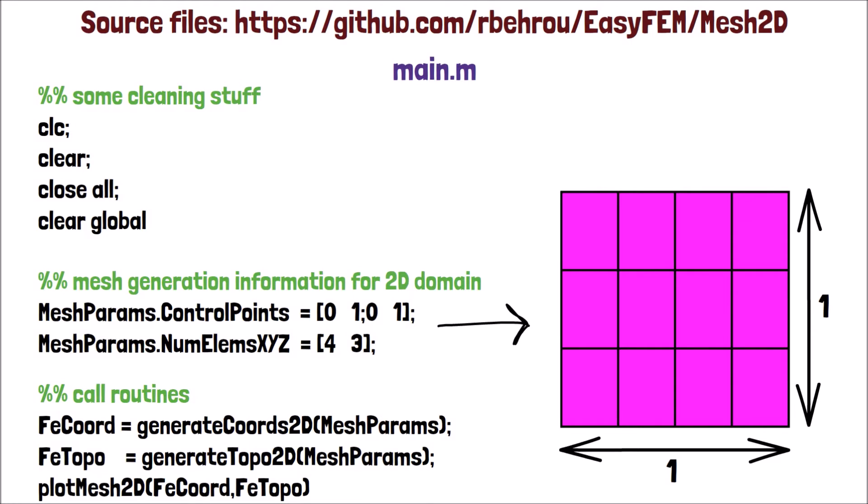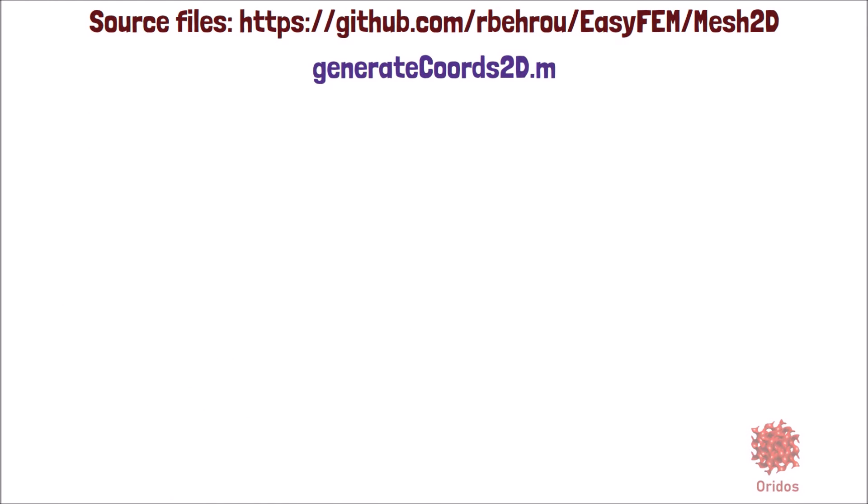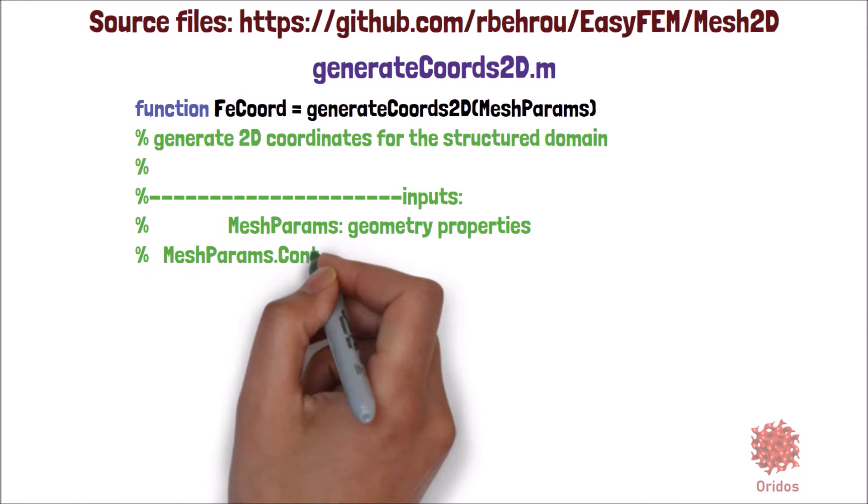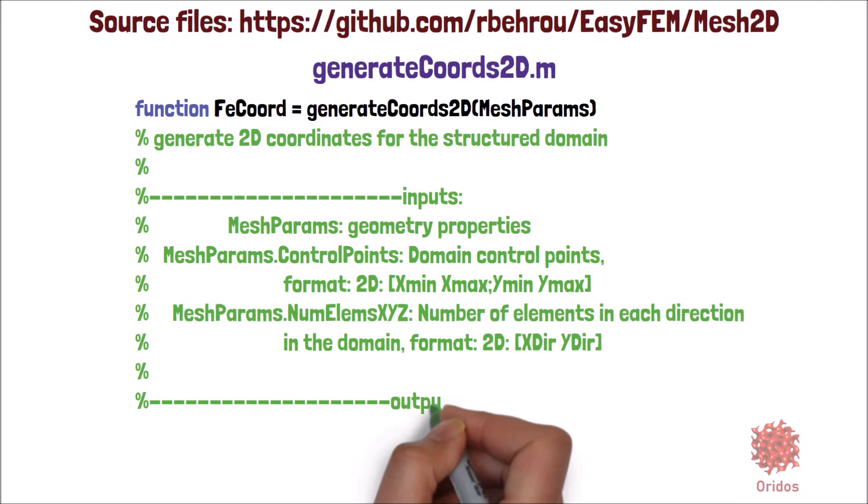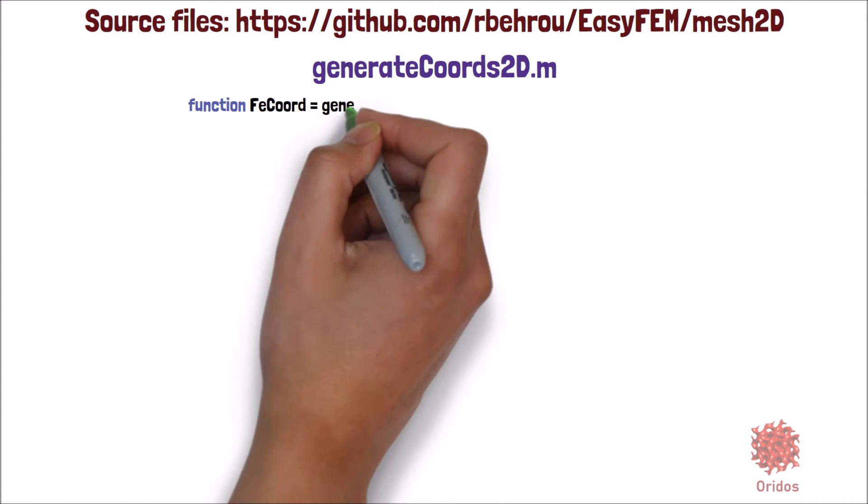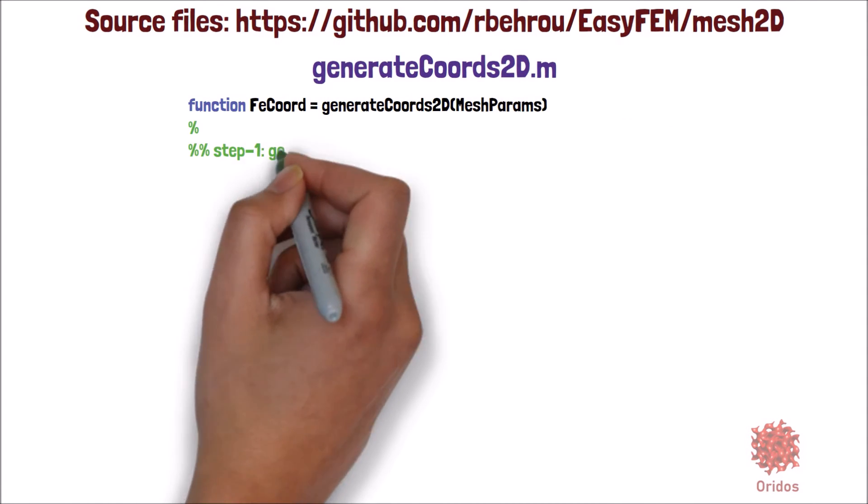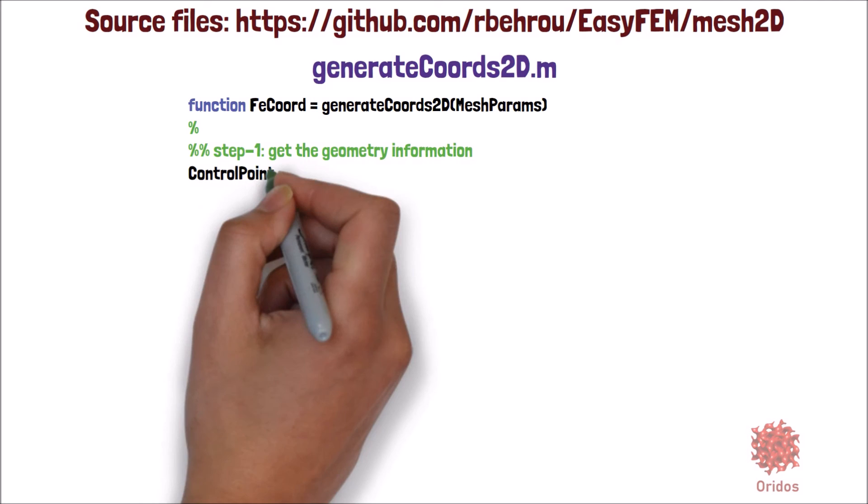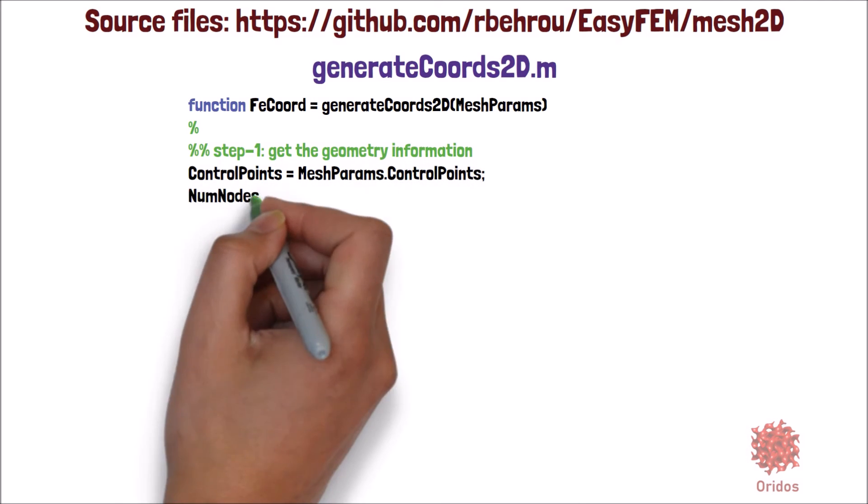First, let's go into the details of the generateCoords2d function. For the generateCoords2d function, here is additional information about the input and output arguments. Inside of this function, step one is to get the geometry information, such as the control points and the number of elements in each direction.